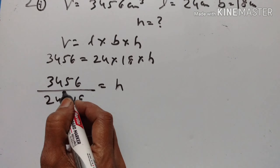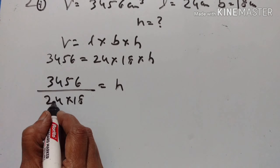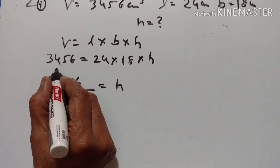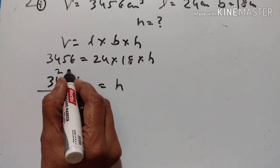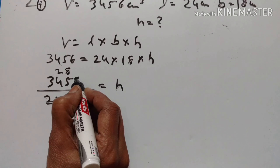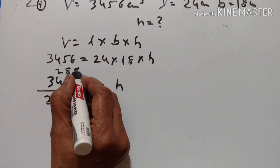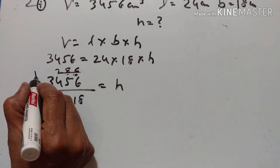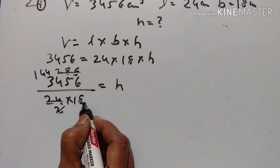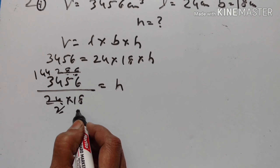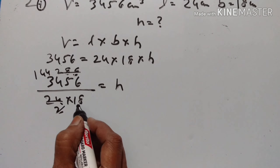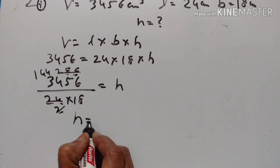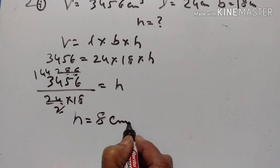Let us divide both numbers by 12. 12 × 2 = 24, 12 × 8 = 96, leaving 9. Then 144 ÷ 18 = 8, since 18 × 8 = 144. Therefore height = 8 cm.